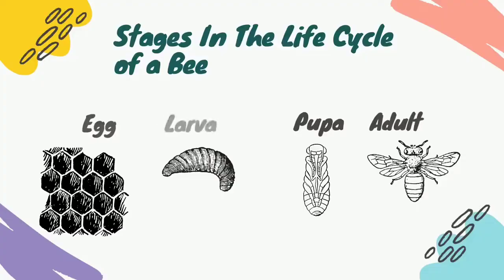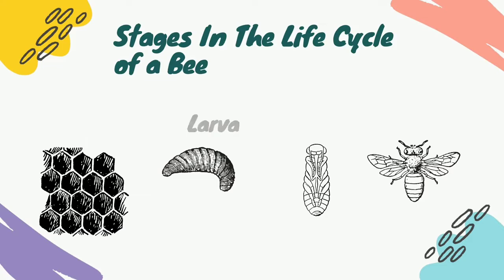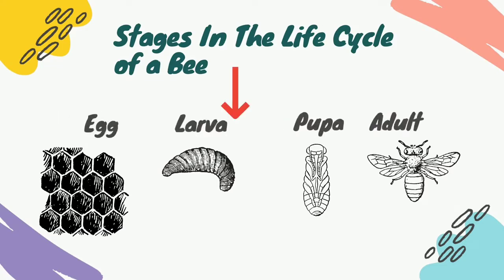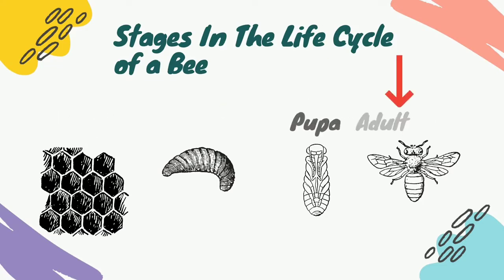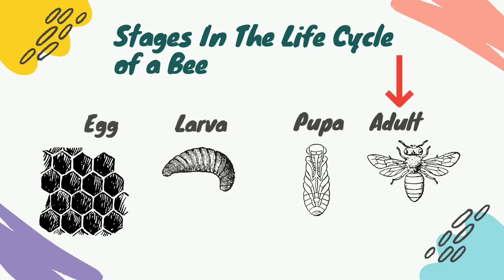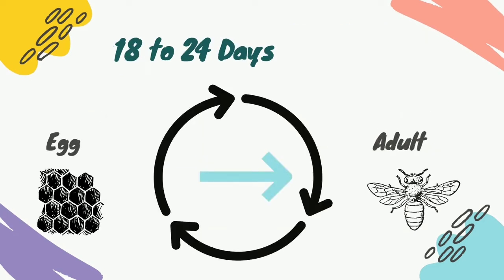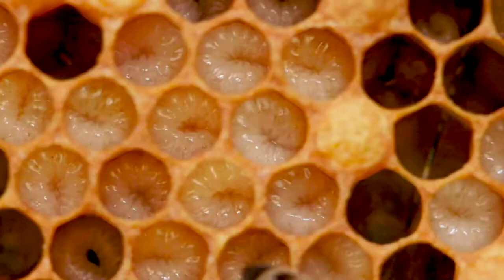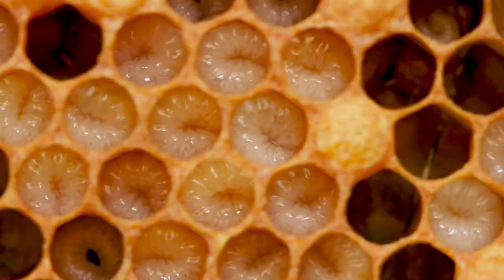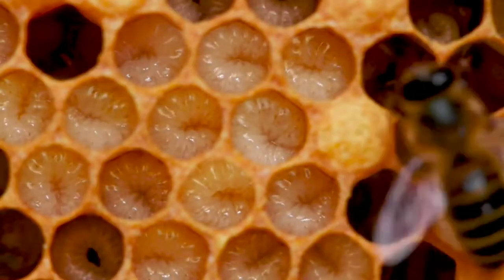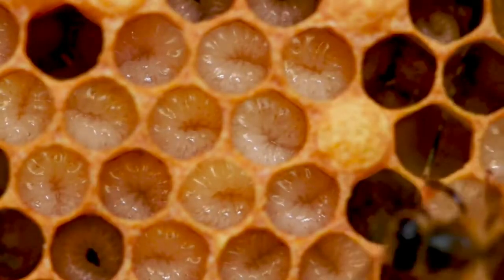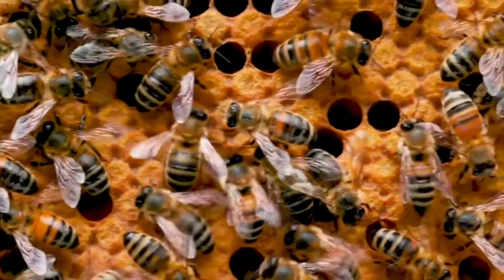Their life cycle goes through four stages: eggs, larvae, pupa, and adult. The development from egg to adult lasts between 18 to 24 days, depending on whether the outcome is a worker bee, queen, or drone.